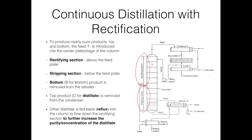The bottom product B is removed from the reboiler, while the top product D — the distillate — is removed from the condenser at the top of the column. Some of the distillate is fed back into the distillation column to flow down in liquid form, coming into contact with the rising vapor. This is done to further increase the purity or concentration of the distillate.